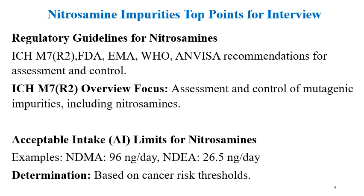ICH M7 R2 focuses on the assessment and control of mutagenic impurities, including nitrosamines. If asked about the ICH guideline for nitrosamines, the answer is ICH M7. Acceptable intake limits include NDMA at 96 nanograms per day and NDEA at 26.5 nanograms per day. These intake limits are based on cancer risk thresholds.